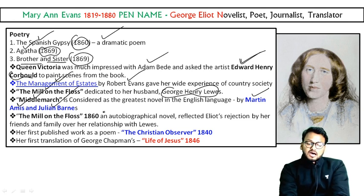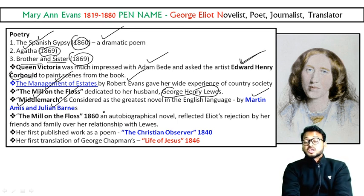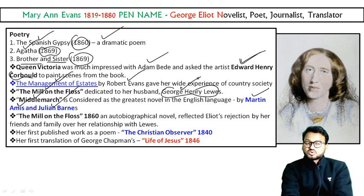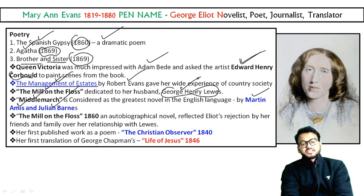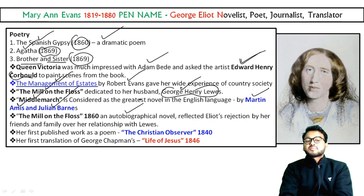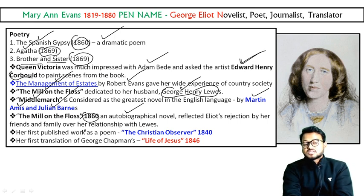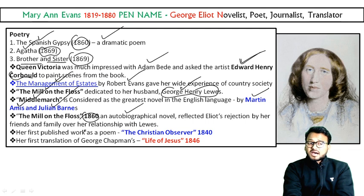The Mill on the Floss also contains some autobiographical elements. George Eliot's own life is visible in this work — she depicted her complete neglect and rejection by her friends, family, and brother, as well as her relationship with her friend George Henry Lewes, whom she later married. This work appeared in 1860.